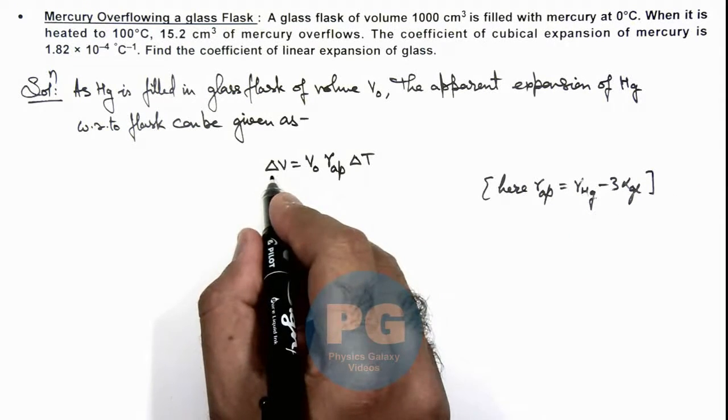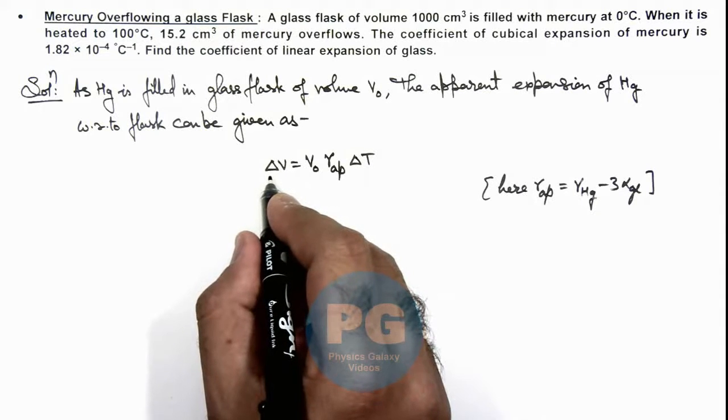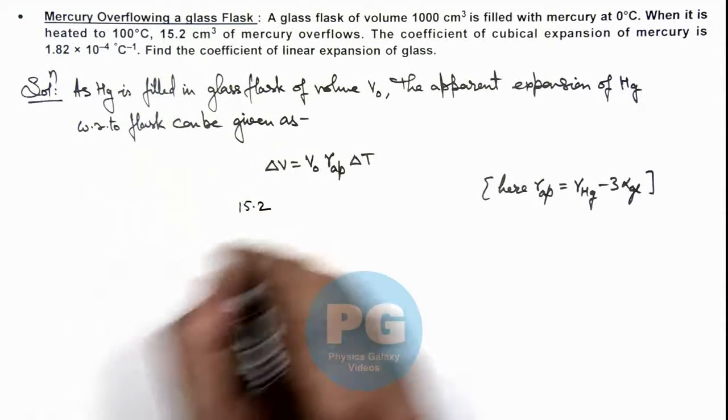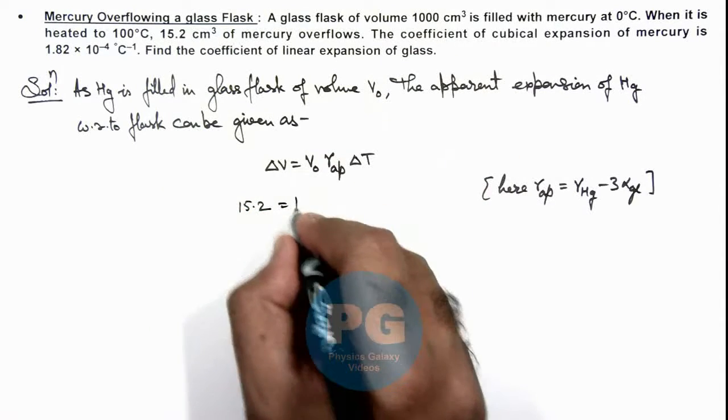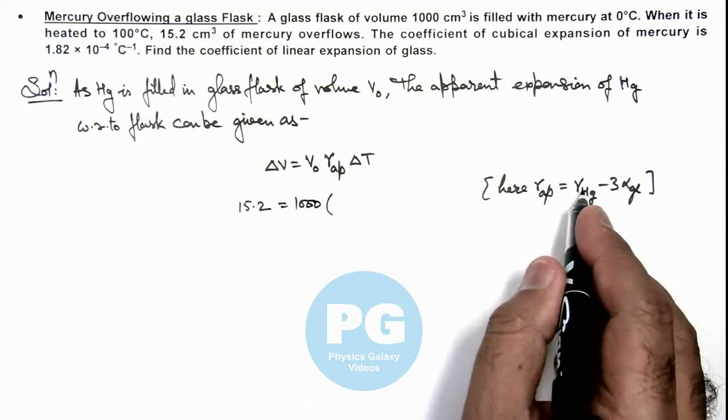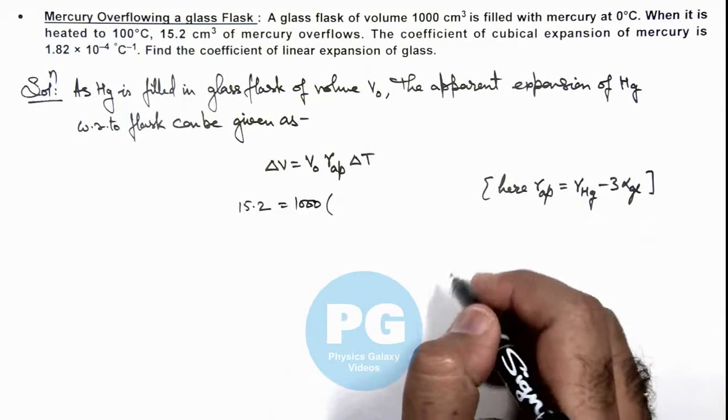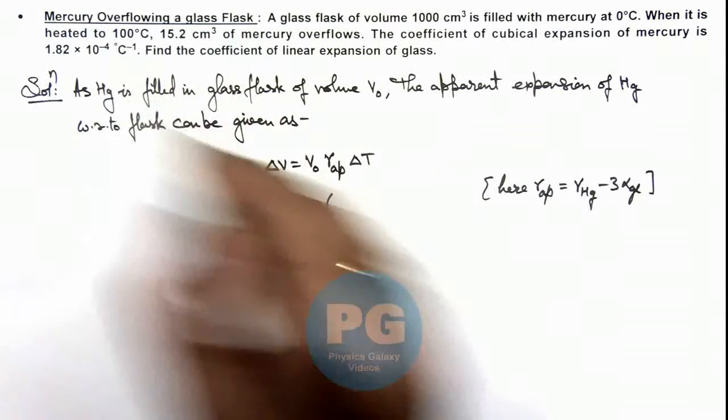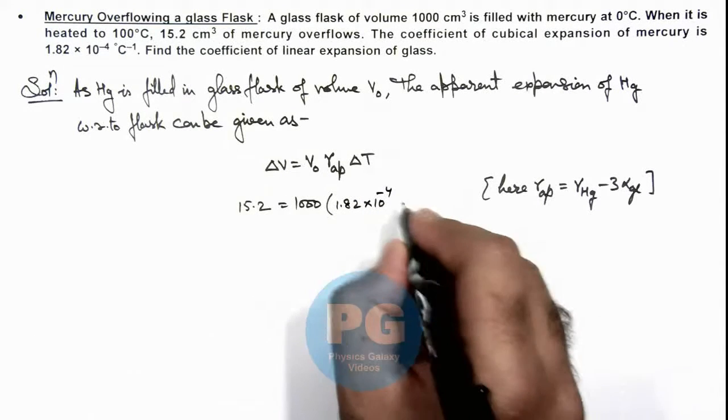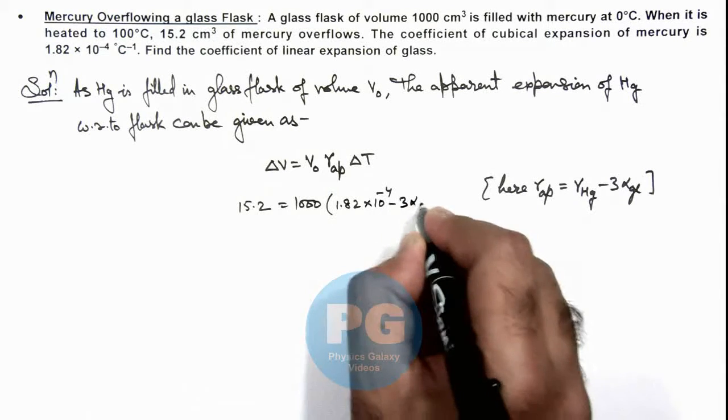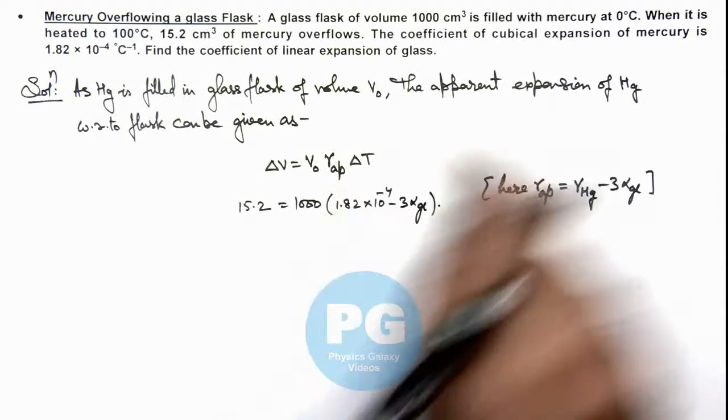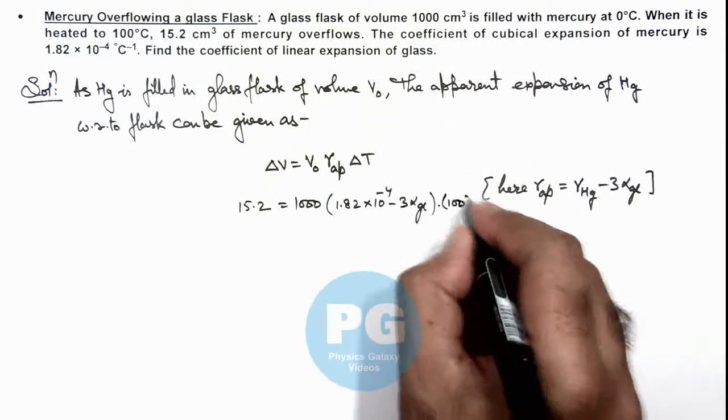So if we substitute, the volume which will overflow is given to us as 15.2. The volume of flask is 1000, multiplied by γ_apparent, we can write as γ_mercury - 3α_glass. So γ_mercury is also given to us as 1.82 × 10⁻⁴ - 3α_glass, multiplied by change in temperature which is from 0 to 100 degrees, so we can take ΔT as 100.